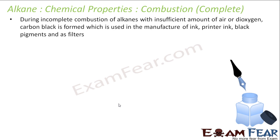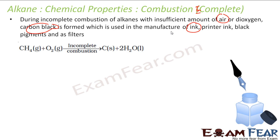Sometimes the combustion is not complete — it is incomplete combustion where we have an insufficient amount of air. With this, you get carbon black, and this carbon black is used to prepare ink. In the case of methane reacting with oxygen in incomplete combustion, you get carbon black. So complete combustion gives CO₂ and water; incomplete combustion gives carbon black, used for ink and filtration.